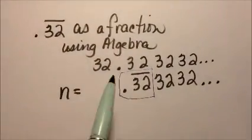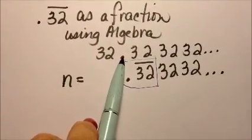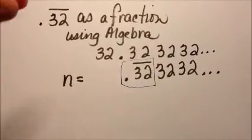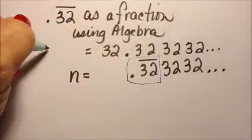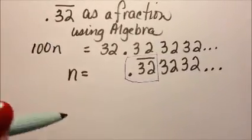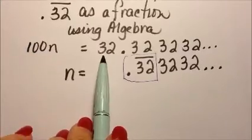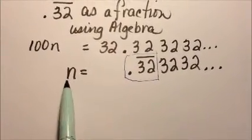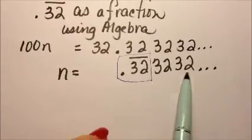Now what would I multiply that by to get that decimal two places over there? I'd multiply it by 100. So this is what the value of 100n is. So 100n is 32.323232 and so on. And n is .3232 and so on.